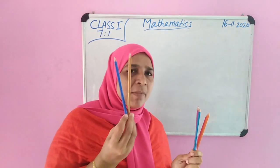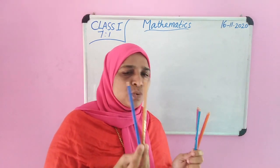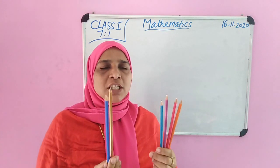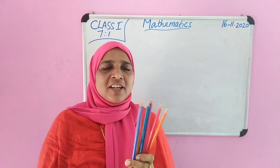In my right hand how many pencils? 2. 1, 2. All together how many pencils? Yes. Okay. 6. Very good.